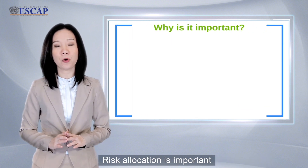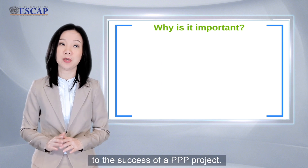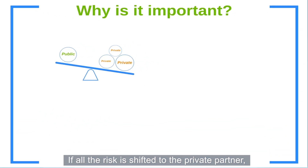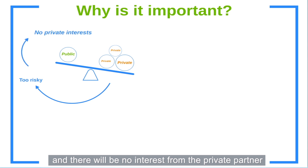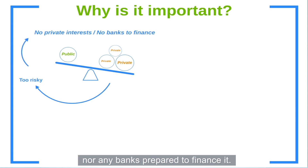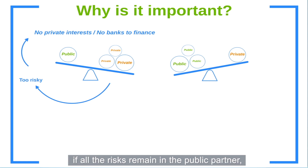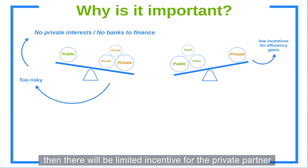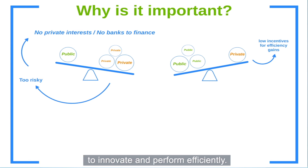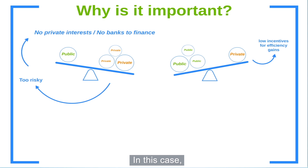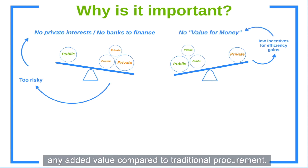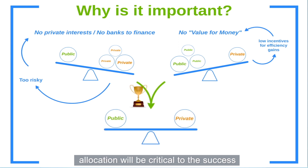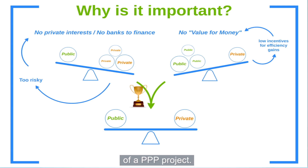Risk allocation is important because it is a critical factor in the success of a PPP project. If all the risk is shifted to the private partner, the project will be deemed too risky and there will be no interest from the private partner, nor any banks prepared to finance it. On the other hand, if all the risks remain with the public partner, there will be limited incentive for the private partner to innovate and perform efficiently. In this case, using the PPP mechanism might not offer any added value compared to traditional procurement, so finding the right balance of risk allocation will be critical to the success of a PPP project.